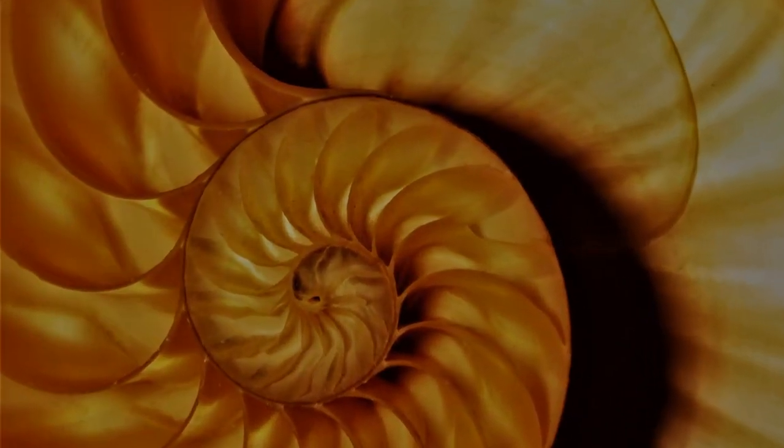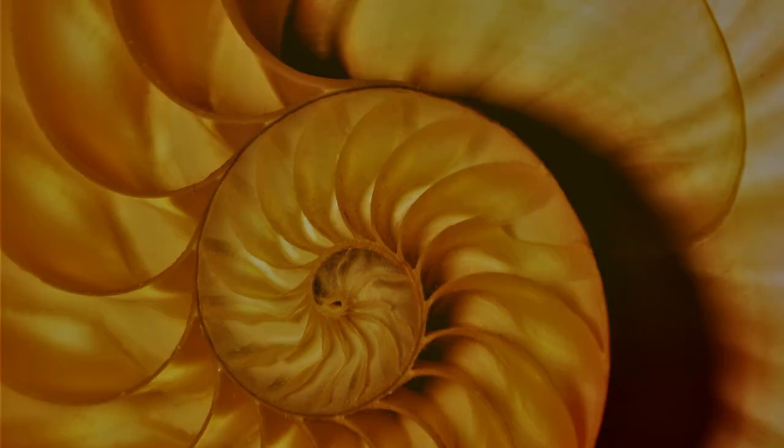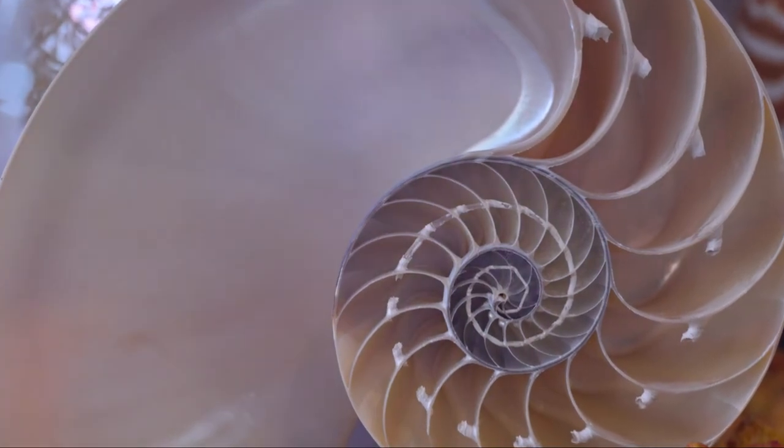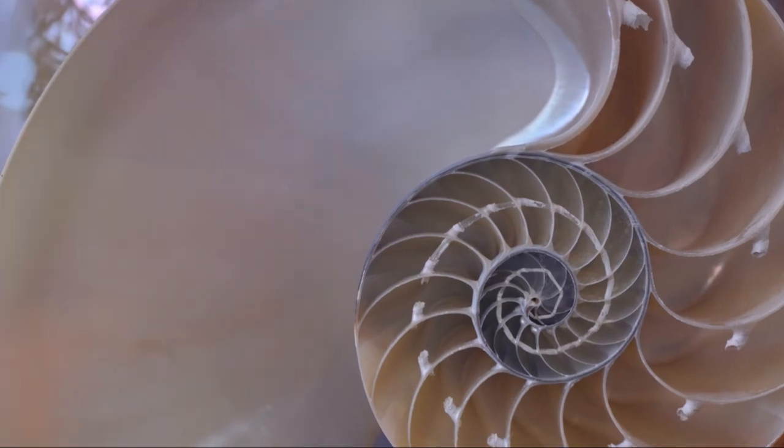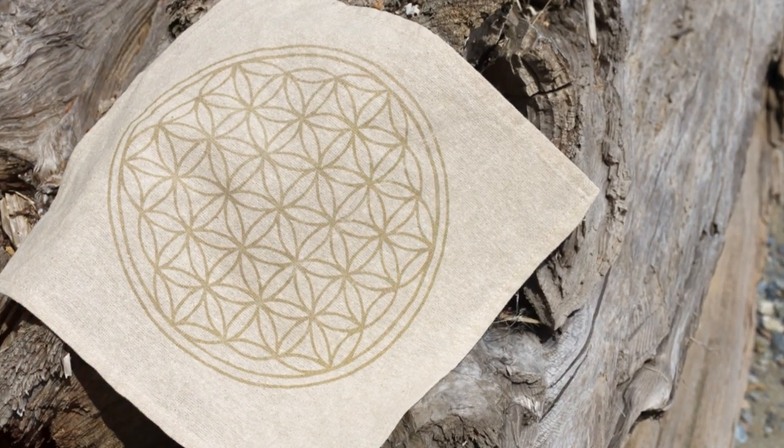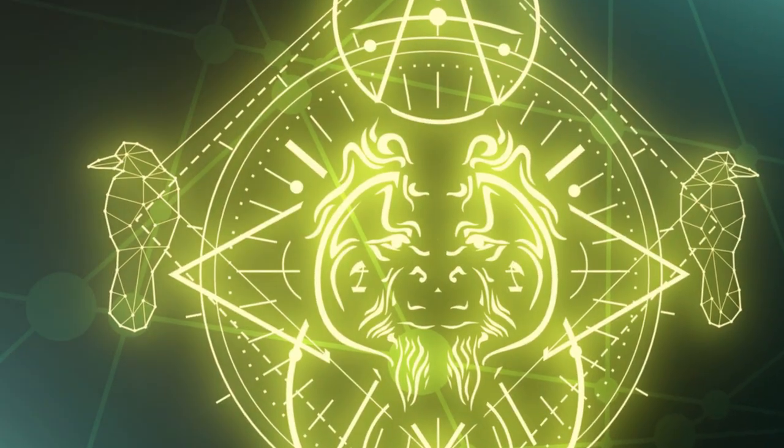Sacred geometry takes this a step further by exploring how certain geometric shapes appear repeatedly in nature, art, architecture and religious symbols. These shapes are believed to be the fundamental structures that underlie the physical world and, by extension, the spiritual world.